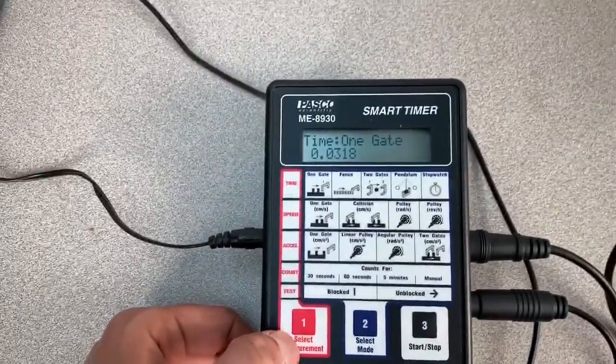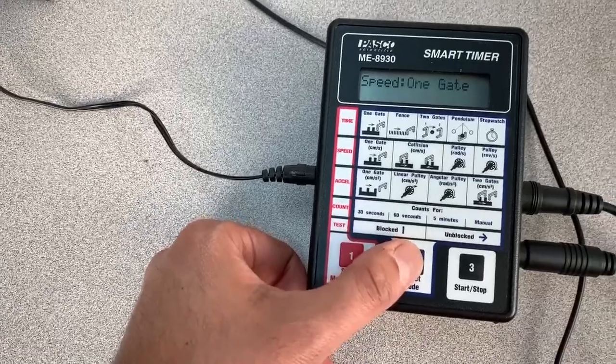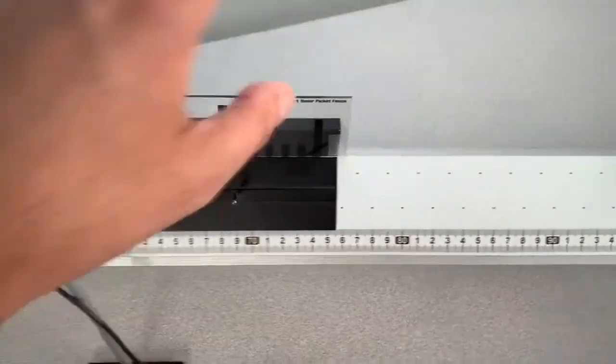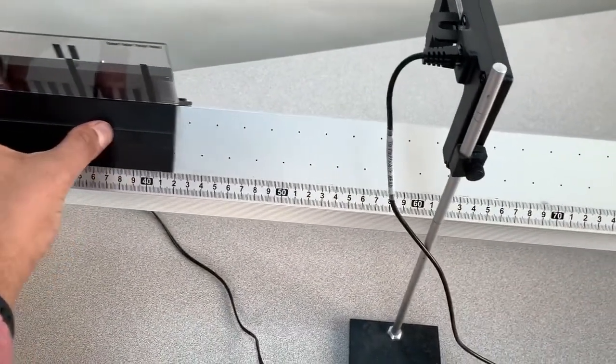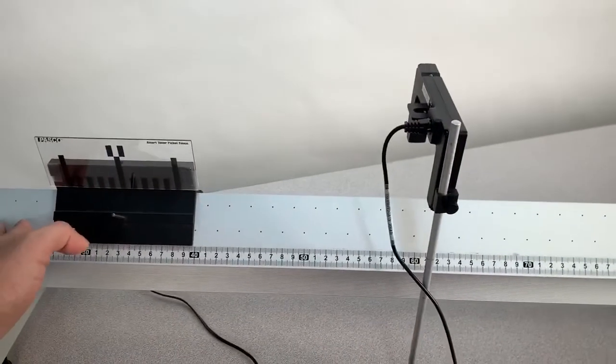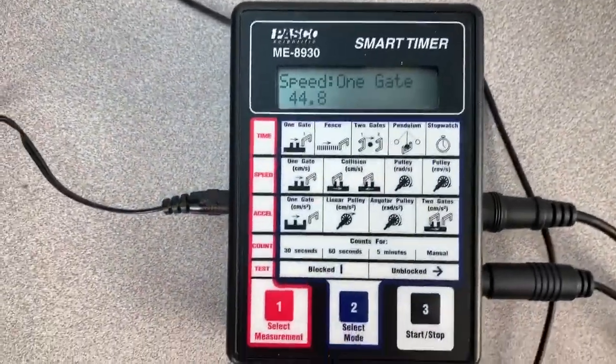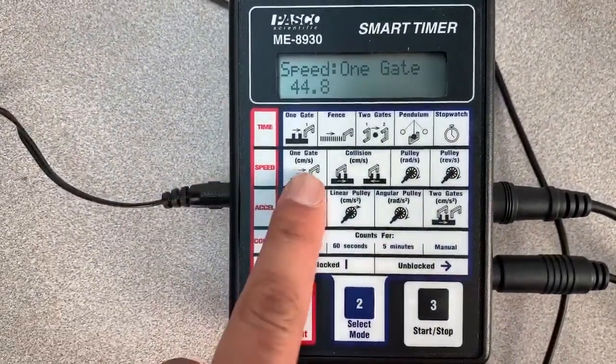Now if we want to get the speed directly I can change the measurement to speed. Change the mode to one gate and I'll reset the cart here. I hit the start button and here I get 44.8 centimeters per second. The units are written here.